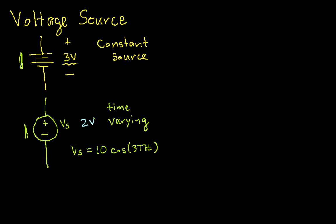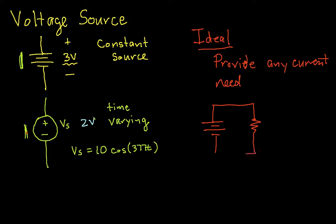Now when we do circuit analysis, we'll typically assume that our sources, both voltage and current sources, are ideal. And an ideal voltage source will provide any current needed. And the idea is that, for example, if I go back to our light bulb example that we've used in previous videos, and suppose I have a 3 volt source here, and I have a light bulb, this 3 volt source will provide whatever current is needed to this light bulb to make sure that the voltage stays at 3 volts.